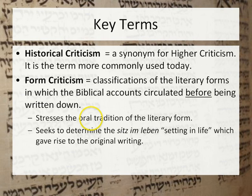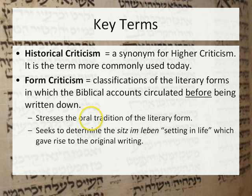For example, we recognize that certain psalms are lament psalms, and we seek to identify the life situation out of which that lament came into being. A psalm that says 'when David fled from Absalom' — we go back and read the story of David fleeing and say, that's the Sitz im Leben of this psalm. But liberal critics want to reconstruct life settings for the Pentateuch not on the basis of the text, but on the basis of their imagination and what they believe went on in the ancient Near East.